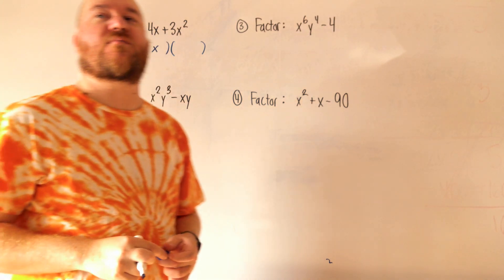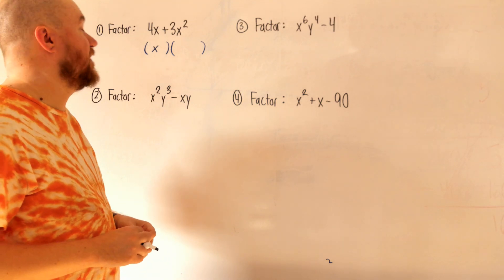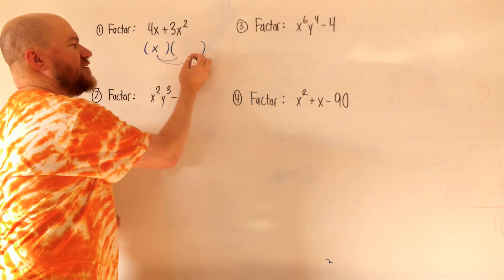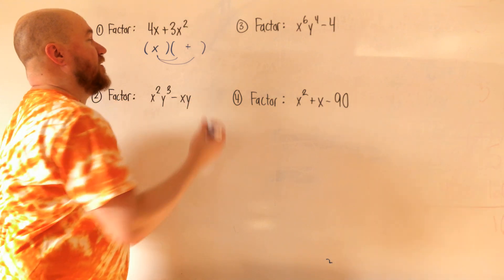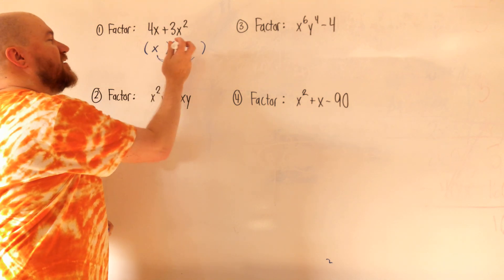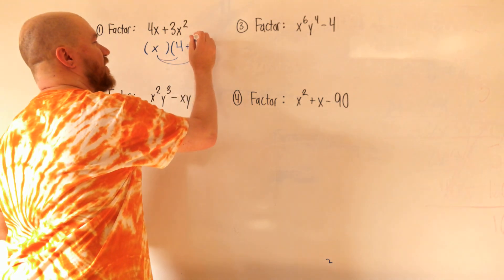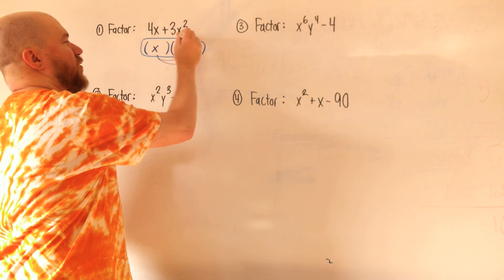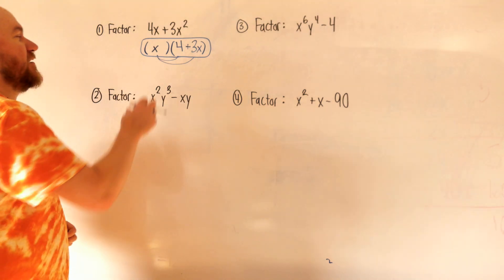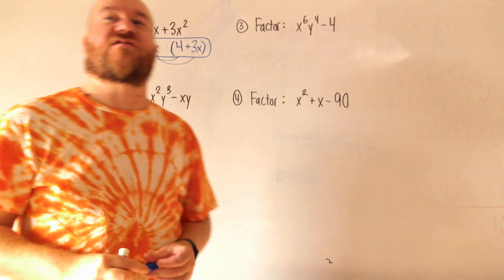So if I put an x in the first parentheses, I'm saying both terms have an x in common. If I put the x here, I'm going to ask: if this x were distributed back into the second parentheses, what would make 4x and what would make 3x squared? x times what is 4x? The answer is 4. x times what is 3x squared? The answer is 3x. So the answer to example one is x(4 + 3x). Sometimes with GCF factoring, you won't see parentheses around the first term when it's just a single term.